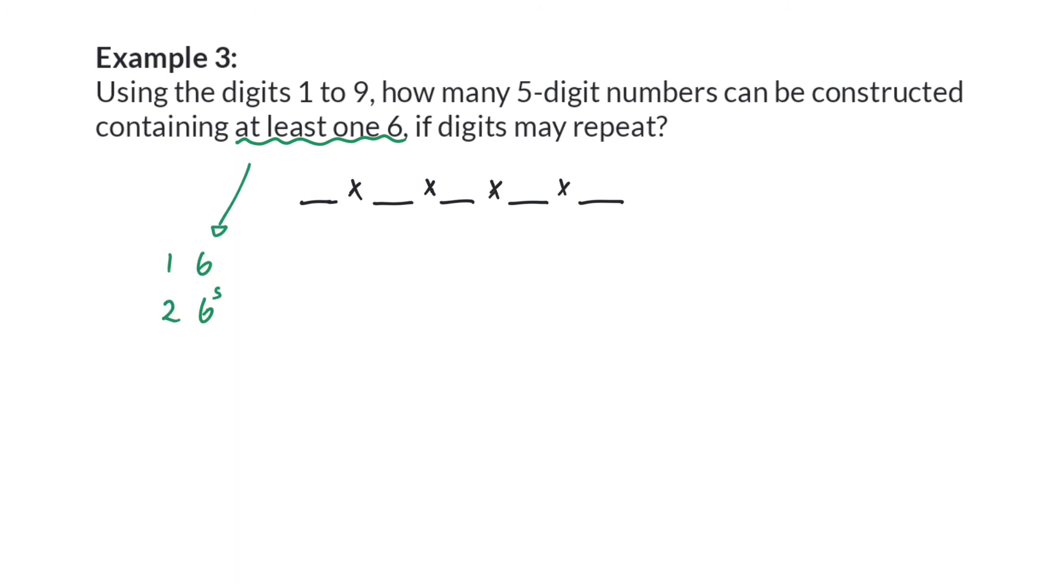This means there can be one, two, three, four or even five 6s. To calculate all these different possibilities will take some doing. Therefore, it will definitely be more effective to take the total number of possibilities and subtract the opposite of what they are asking. The opposite of at least one 6 will then be no 6s.